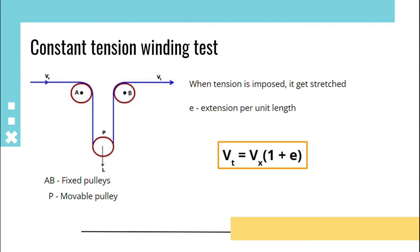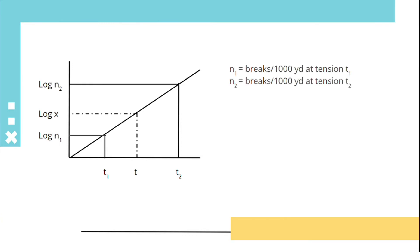Consider a graph between the breaks and tension. Let N1 be the breaks per thousand yard at tension T1 and N2 will be the breaks per thousand yard at tension T2. Here, slope will be log N2 minus log N1 by T2 minus T1, that is constant.